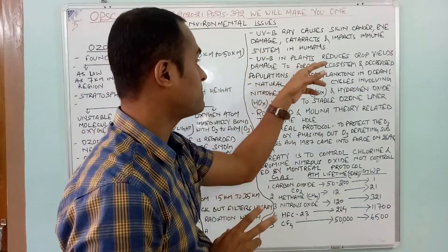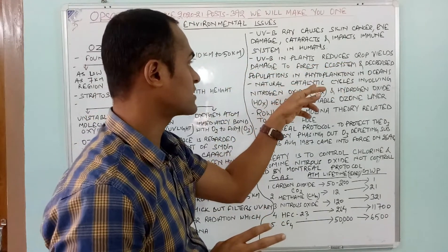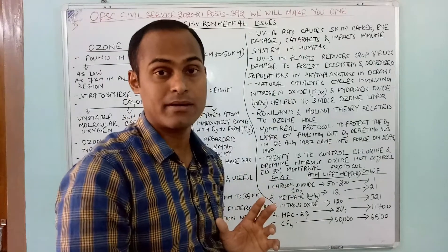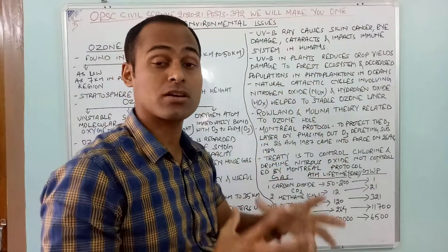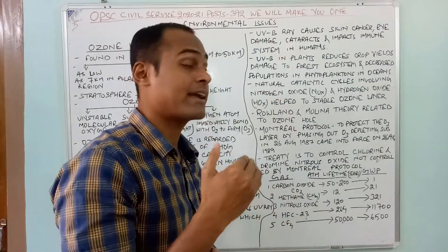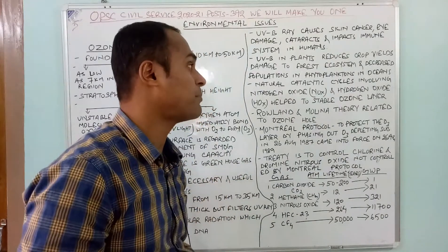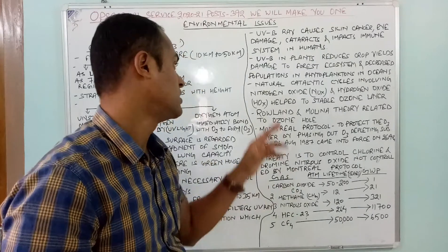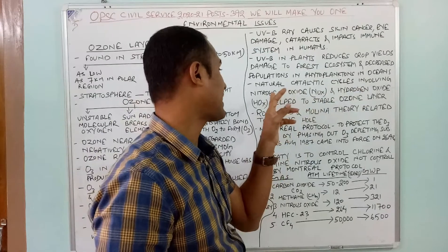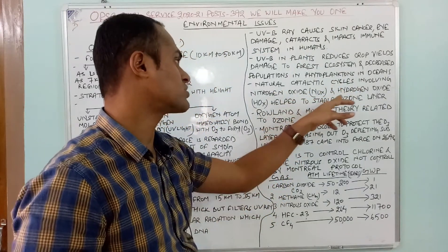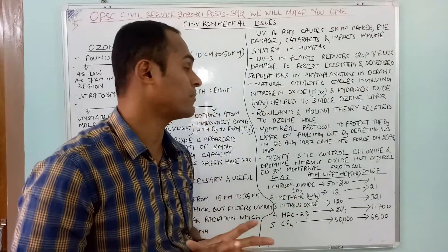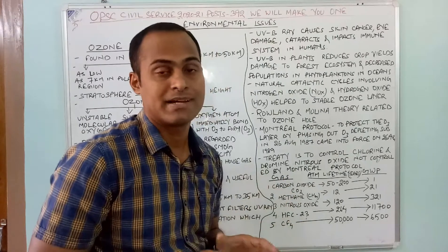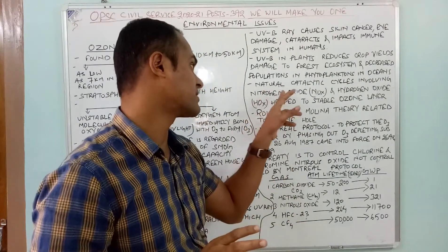Ultraviolet-B rays in plants reduce crop yield and damage forest ecosystems. In the ocean, UV-B decreases the population of phytoplankton. Additionally, a natural catalytic cycle involving nitrogen oxide and hydrogen oxide helps to stabilize the ozone layer.